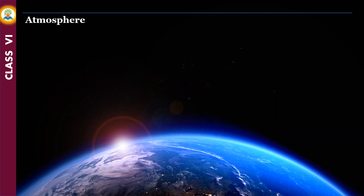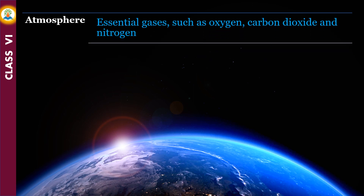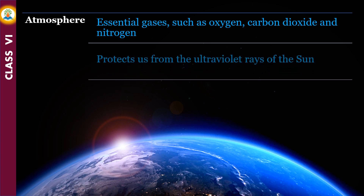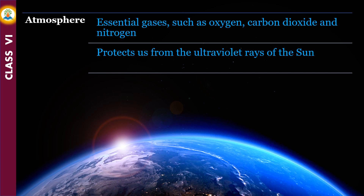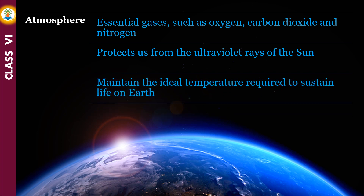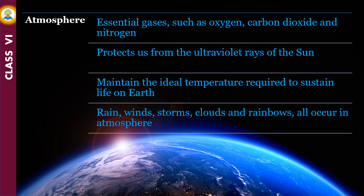The atmosphere plays an important role in sustaining life on earth. It contains essential gases such as oxygen, carbon dioxide, and nitrogen required to sustain life. It also protects us from the ultraviolet rays of the sun and helps maintain the ideal temperature required to sustain life. If it were not for the atmosphere, days on the earth would have been scorching hot and nights would have been freezing cold. Weather phenomena such as rain, winds, storms, clouds, and rainbows all occur in the atmosphere.